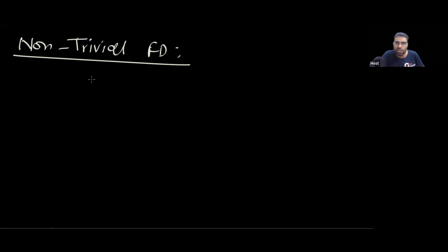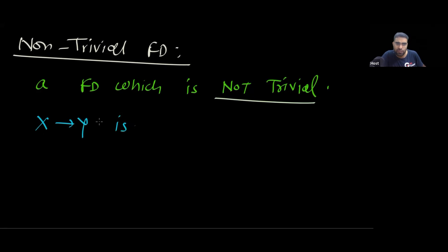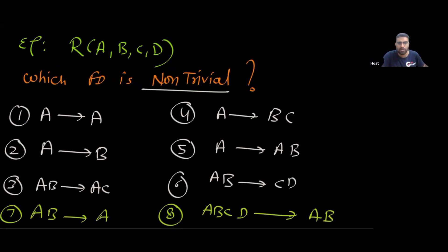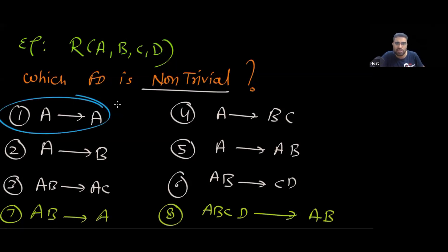What about non-trivial functional dependency? The name itself tells you — non-trivial means that which is not trivial. A functional dependency which is not trivial: I can say it is non-trivial if and only if X is not a superset of Y. Tell me which of these examples are trivial and which are not — you can see these are trivial.